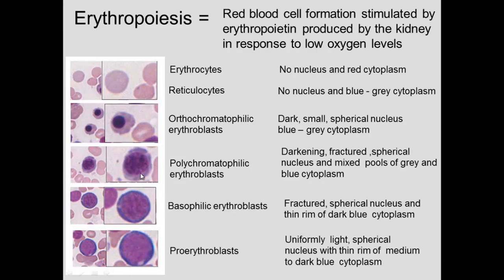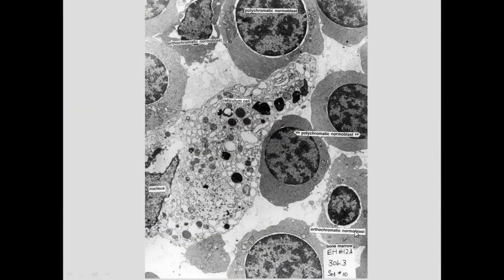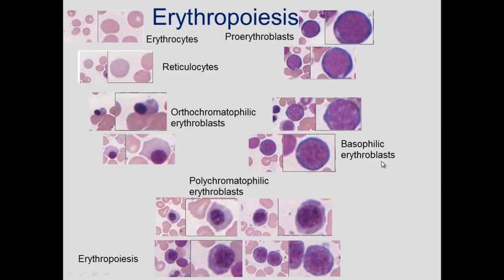The cytoplasm starts out blue, mixes blue with hemoglobin, and ends up with few ribosomes and then just hemoglobin, which makes the red blood cell red. If we look at these with an electron microscopic view, a red blood cell looks very homogeneous — kind of boring inside — other than it's got hemoglobin, which is very important. The reticulocyte has hemoglobin and ribosomes, and the orthochromatic has more ribosomes. The polychromatic has more ribosomes, and then you have lots of ribosomes in the basophilic and the pro-erythroblast. The polychromatic one has a combination of ribosomes and hemoglobin.